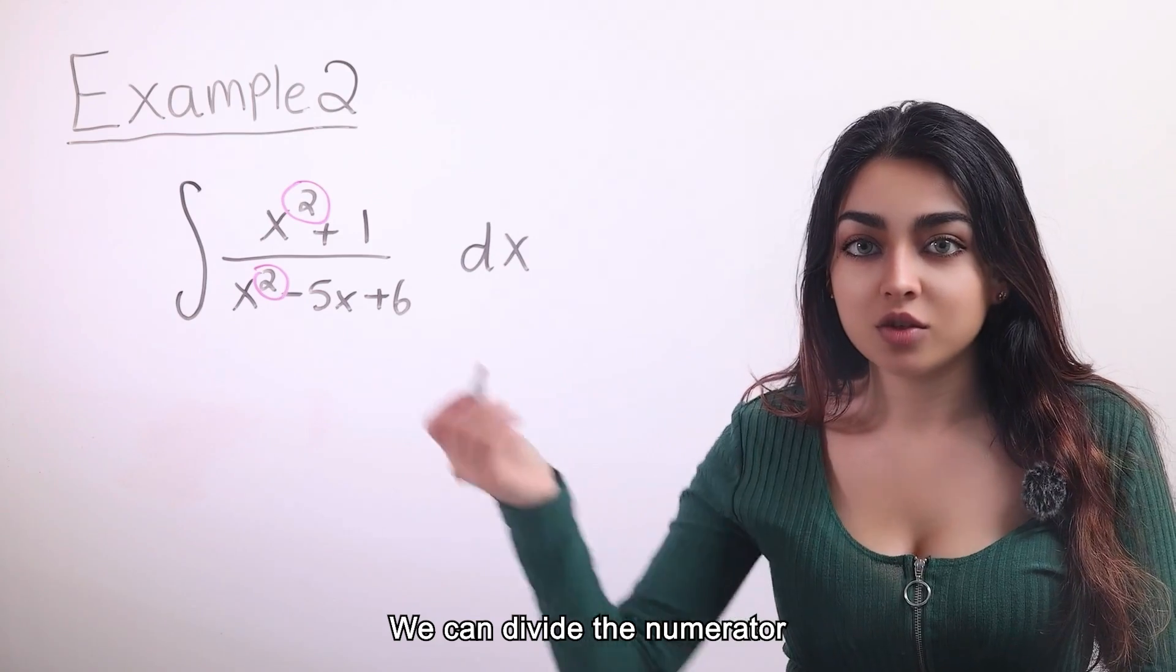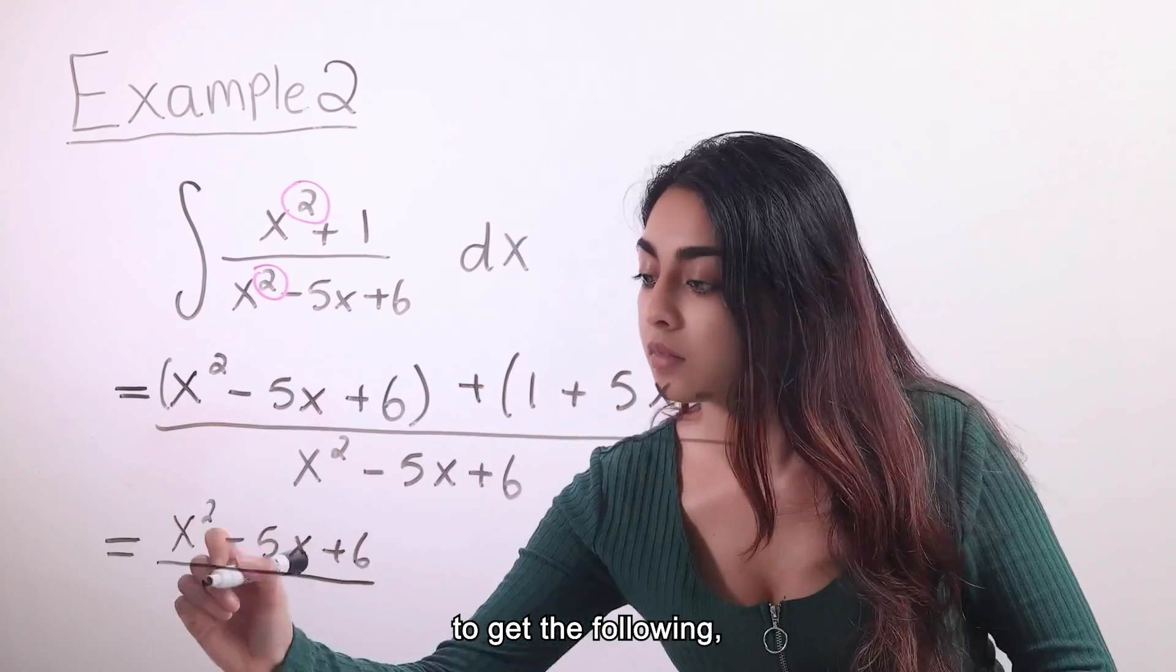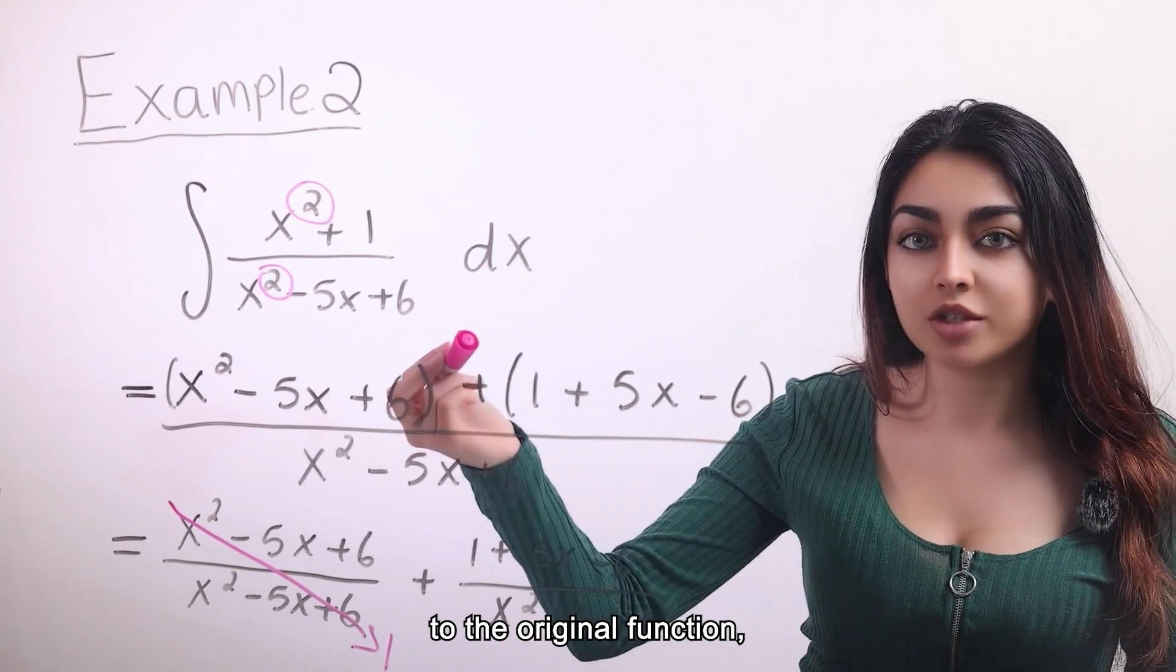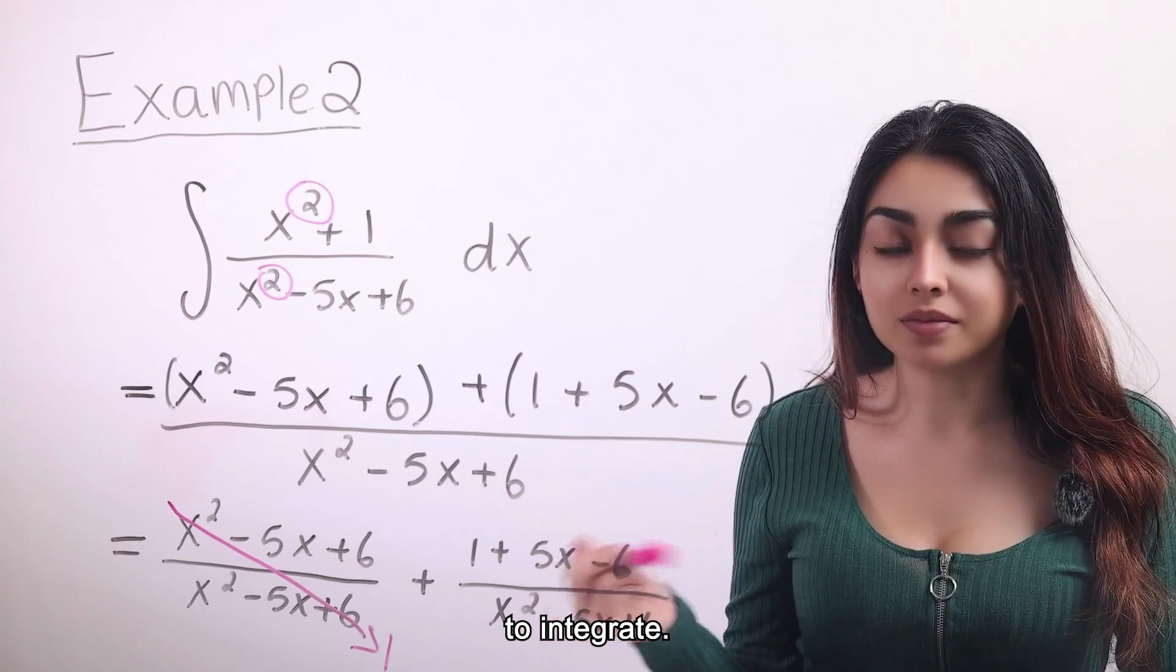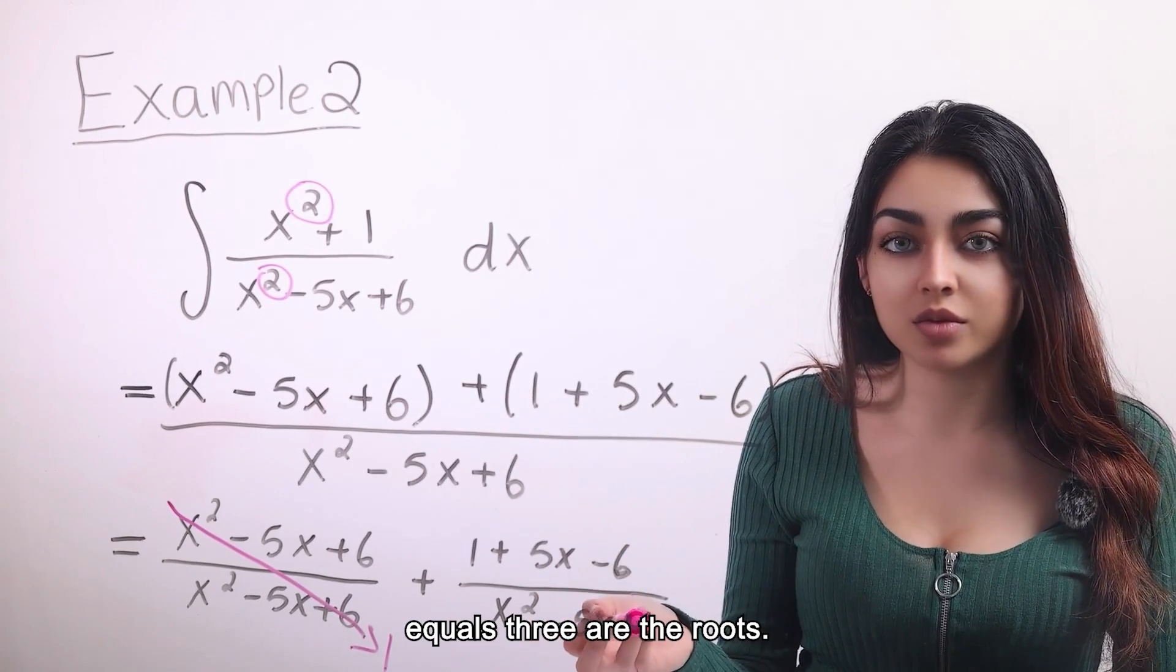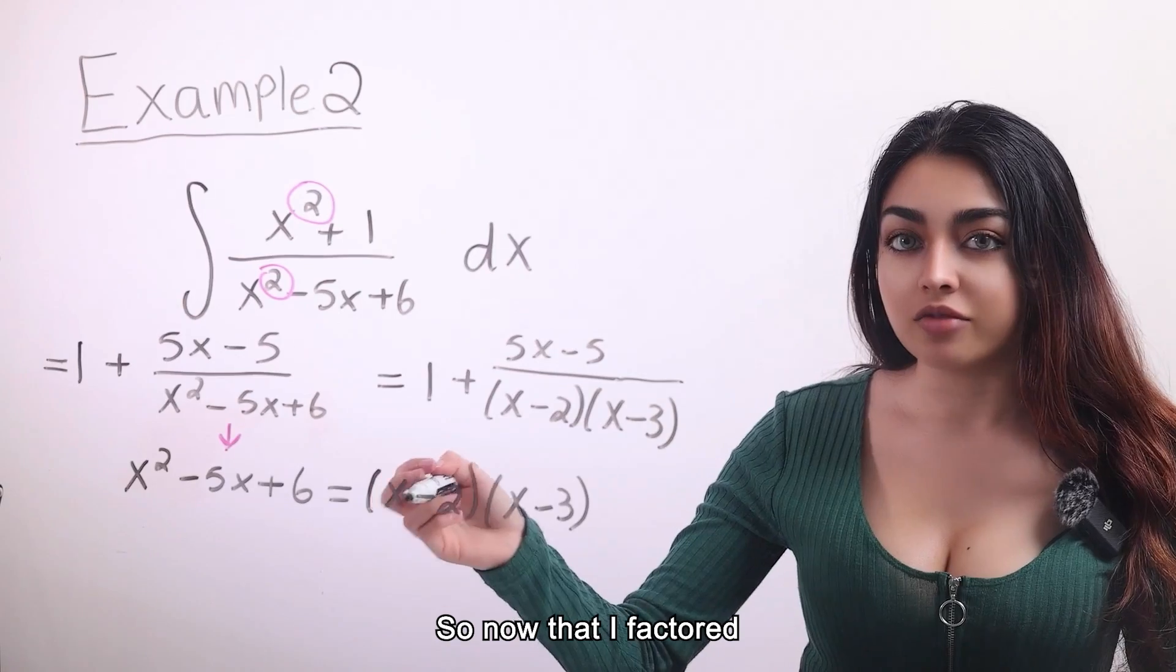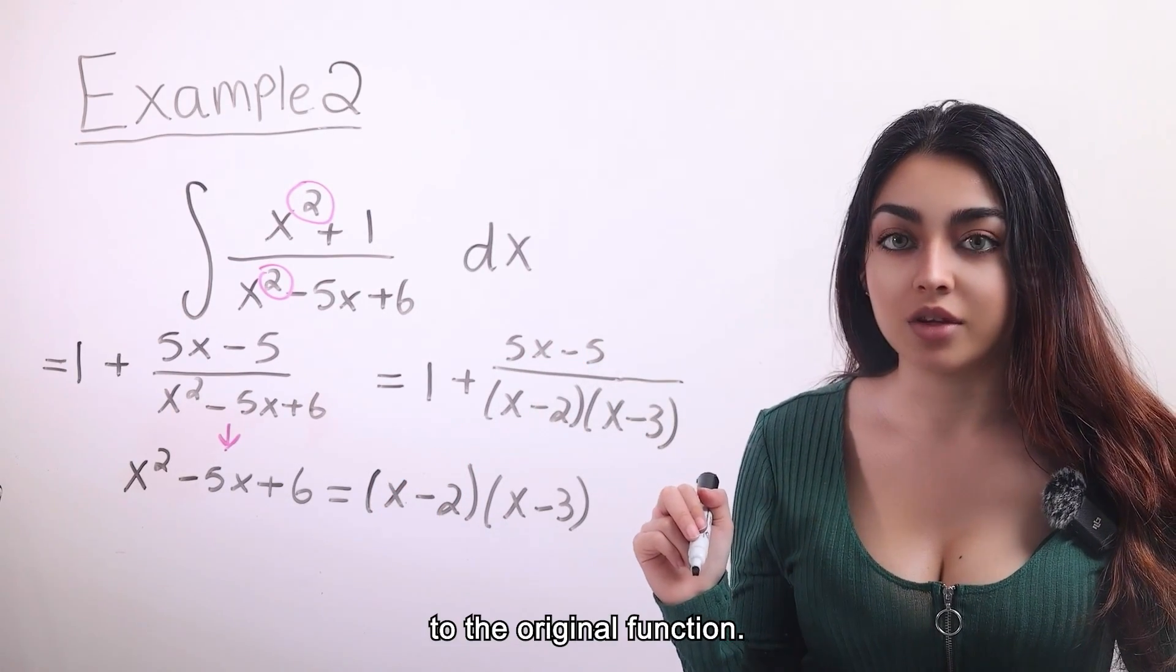We can divide the numerator by the denominator to get the following. We can see that this expression is identical to the original function, but now it's much simpler to integrate. Let's next factor out the denominator and we can see that x equals 2 and x equals 3 are the roots. So now that I factored the denominator, I just plugged it back into the original function.